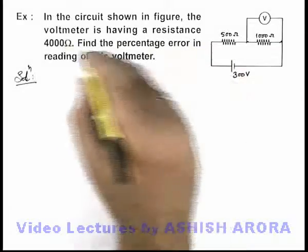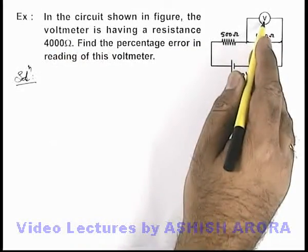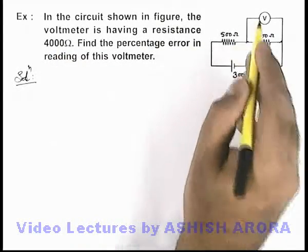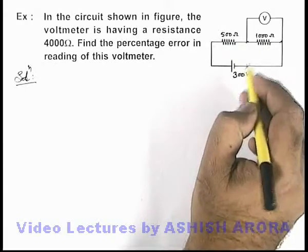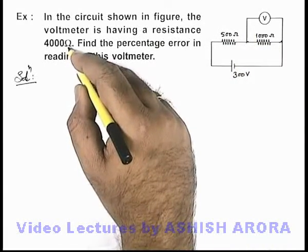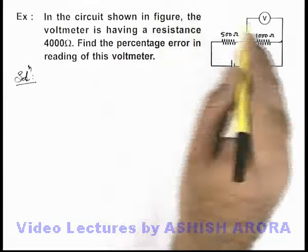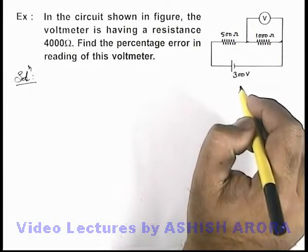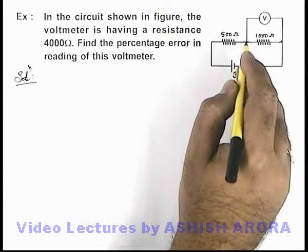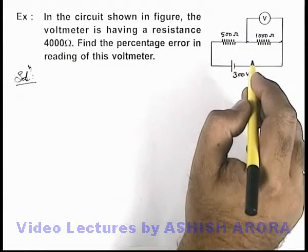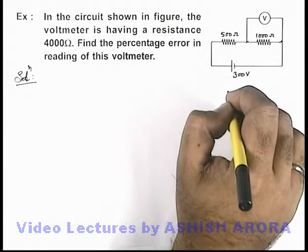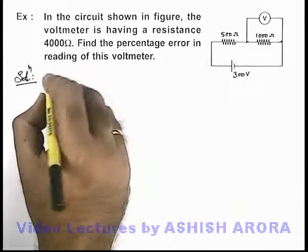Since we are given a finite resistance for this voltmeter, which is connected in parallel, it will obviously draw some current. After connecting this voltmeter, the 4000 ohm resistance will be considered in parallel with the 1000 ohm. Due to the drawing of some current by the voltmeter, its reading will not be accurate. So we need to calculate the current in the circuit.